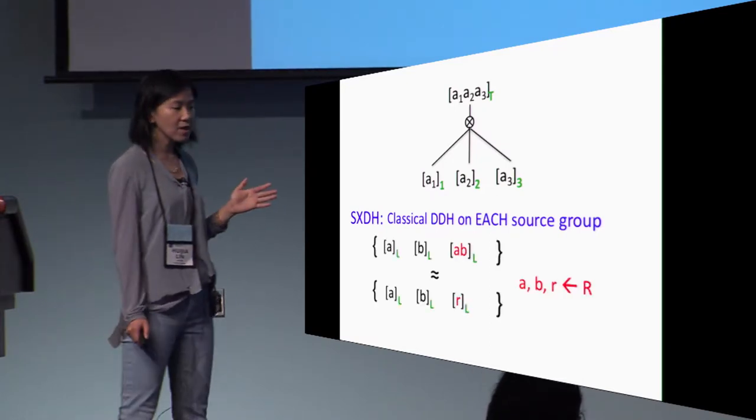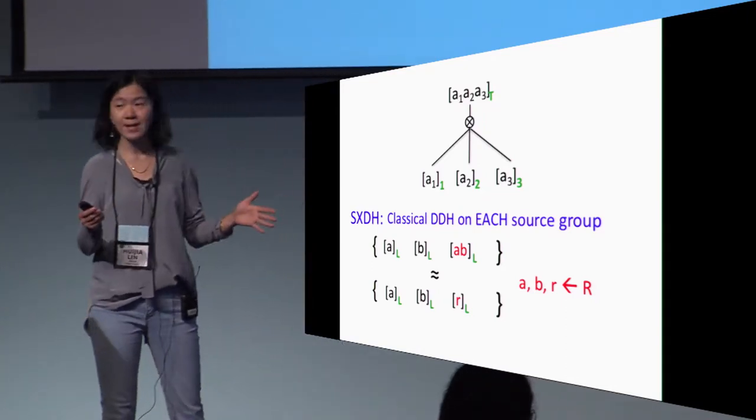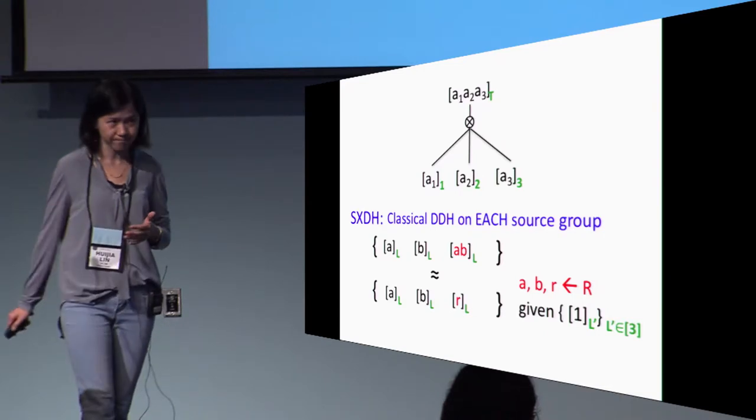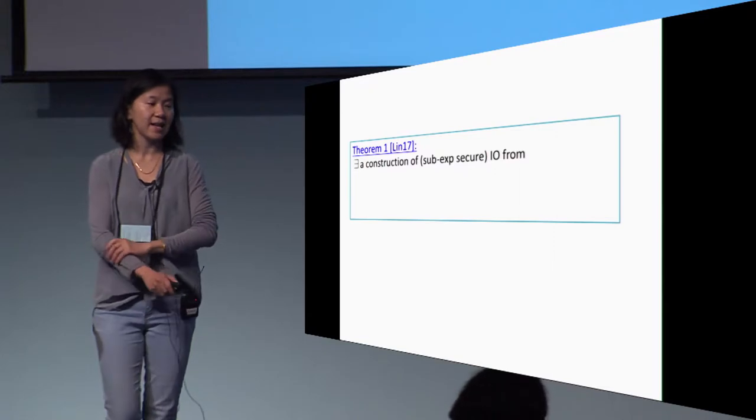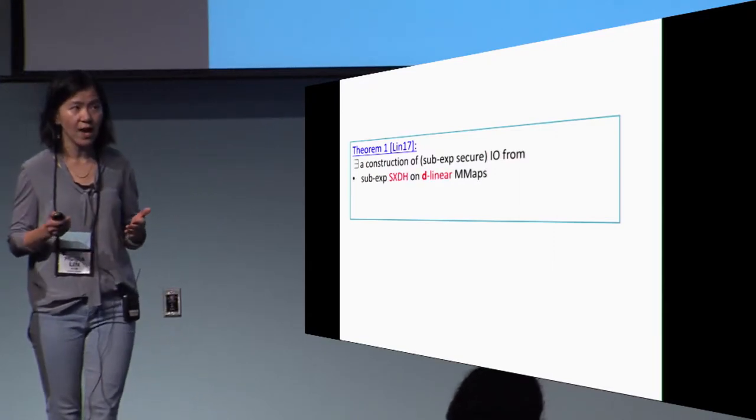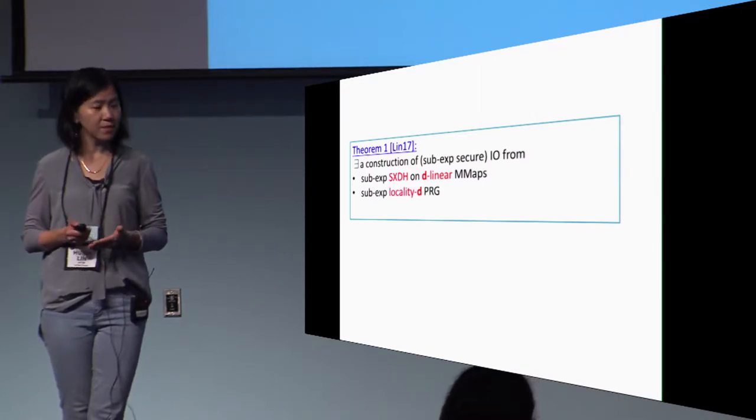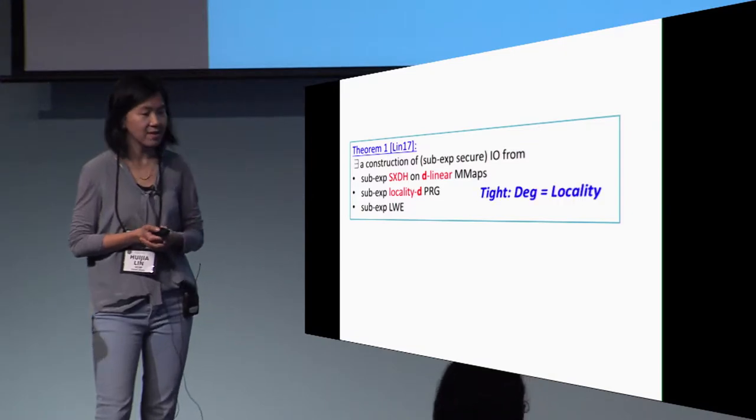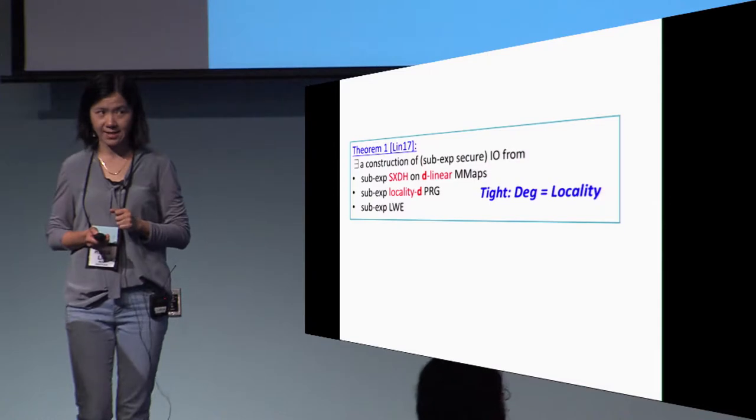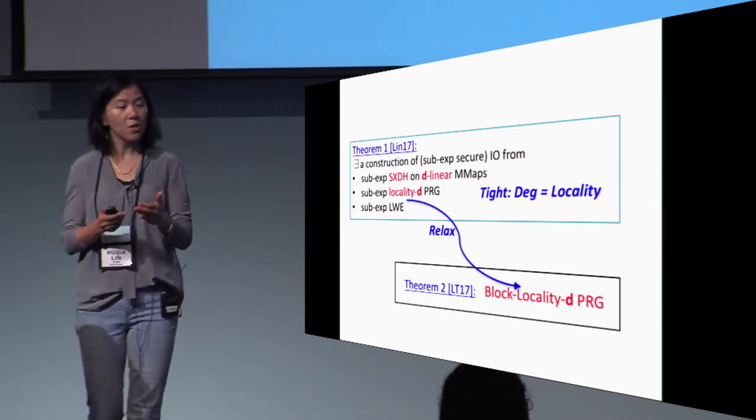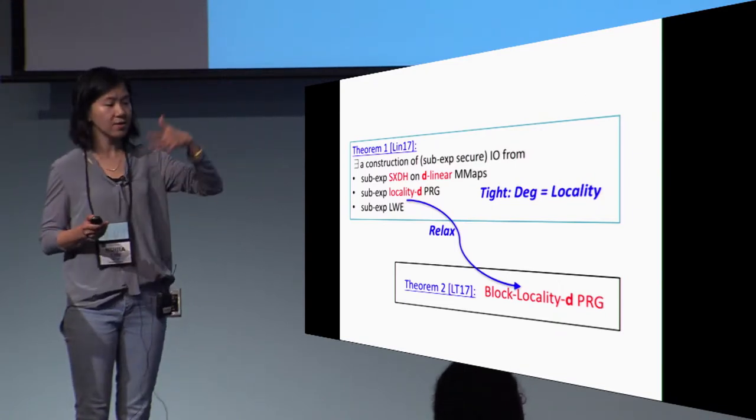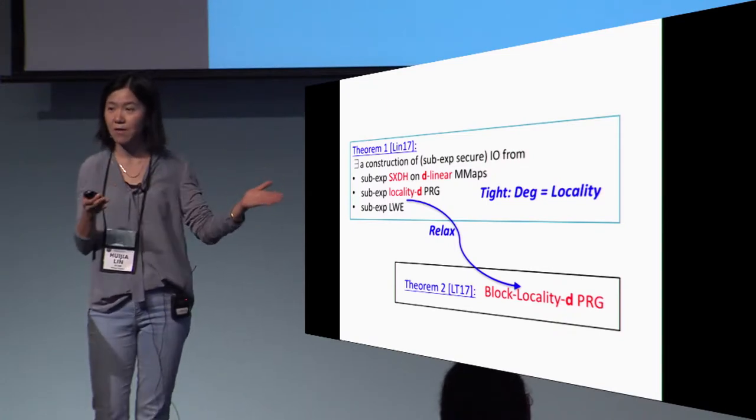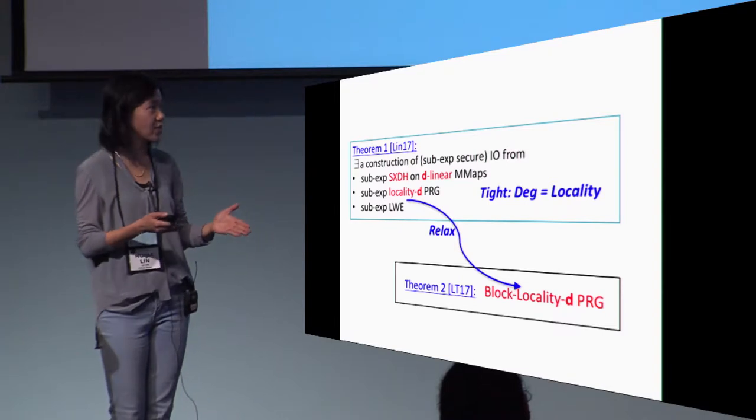What about the SXDH assumption? It's also very simple. It's basically requiring the basic DDH assumption to hold in each individual source group. Take any source group L. We want the encoding of the DDH tuple AB and AB to be indistinguishable from encoding of just random elements. This should hold even when the generator in all source groups are available. The main theorem in the first paper says we can construct IO from sub-exponentially secure SXDH assumption on degree D multilinear map with the help of a sub-exponentially secure locality D PRG and sub-exponential LWE. Note that here the degree of the multilinear map needed really equals to the locality. The main theorem in the second paper basically says we can in fact swap off this locality D PRG with this weaker block locality D PRG. With these assumptions, you can just plug in a locality 5 PRG to get IO from 5-linear map, or plug in a blockwise locality 3 PRG to get IO from trilinear map.